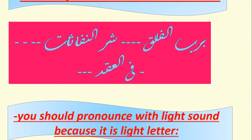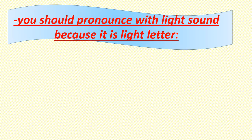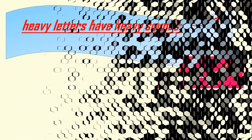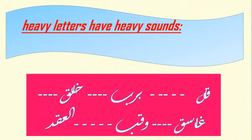Pronounce light letters with a light sound. Example: Al-falaq — it's a light fa, not heavy. Khalaqa — light kha, not heavy. Waqab — light wa. Shari — light sha, not sha with heaviness. Heavy letters have heavy sounds: Qul — heavy qaf sound. Bi-rabbi — heavy ra. Khalaqa — heavy ha. Ghasiqin — heavy gha, not light gha. Waqab, al-uqad — heavy sounds.